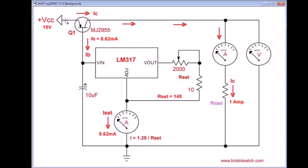Let's follow our current flow from emitter to collector, and that current flow from emitter to collector is controlled by the current flow from emitter to base, which is controlled by the LM317 and is set for 8.62 milliamps, 8.62 milliamps times 116 is approximately 1 amp.